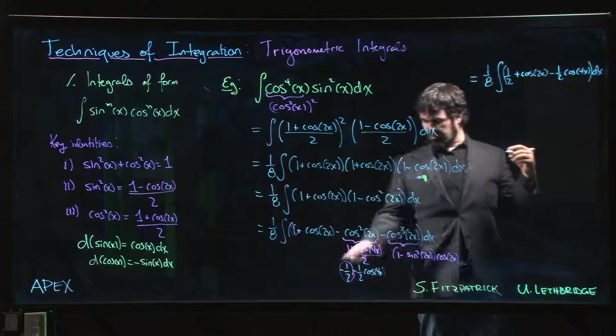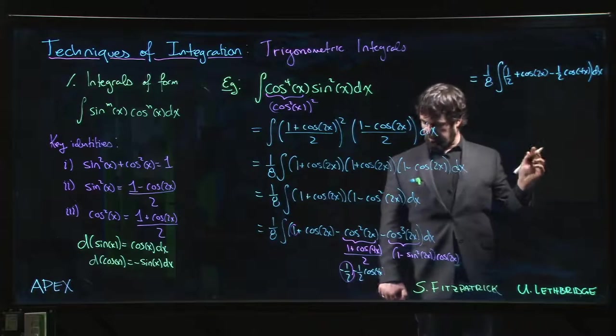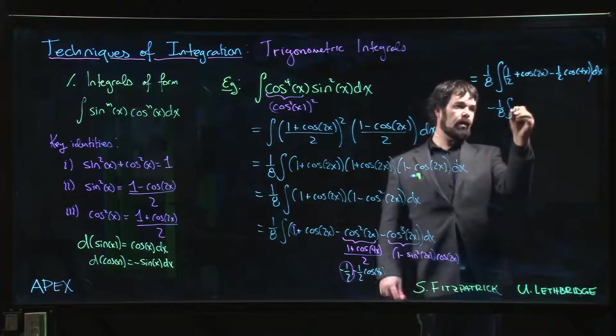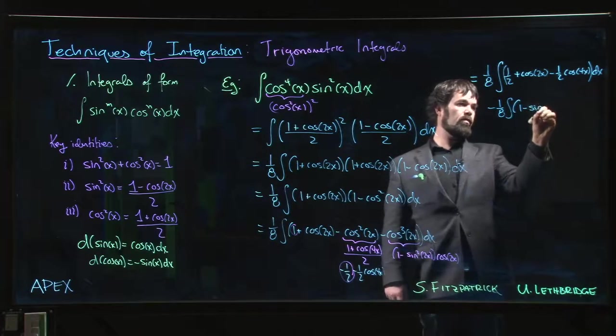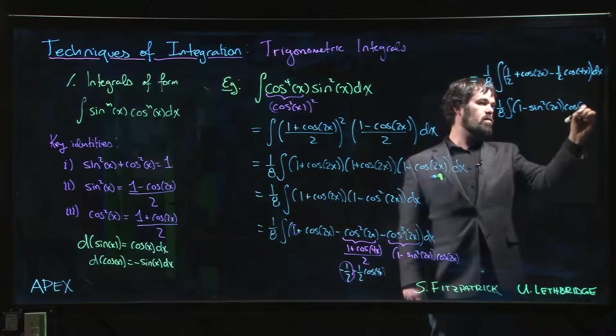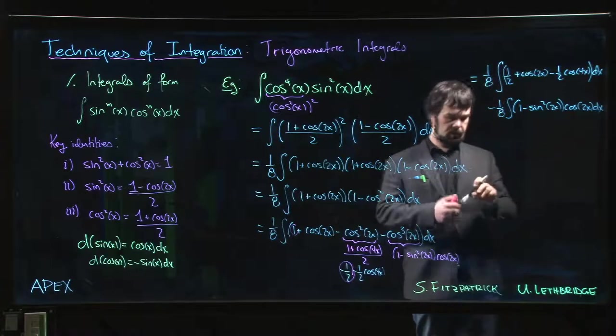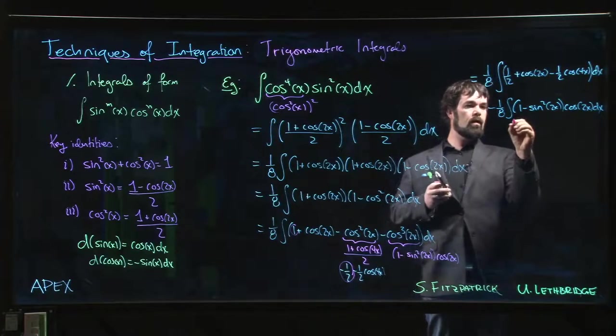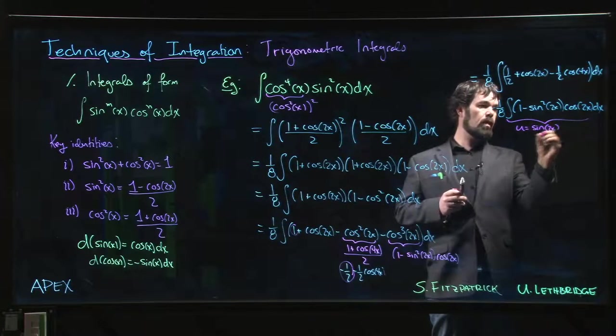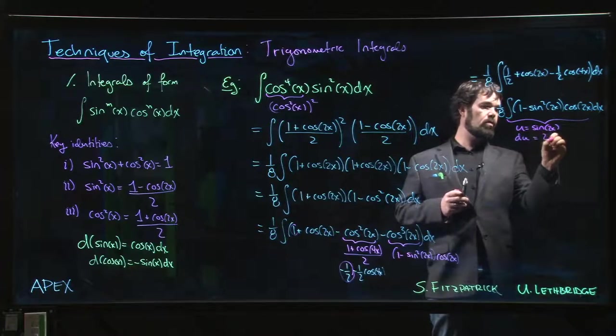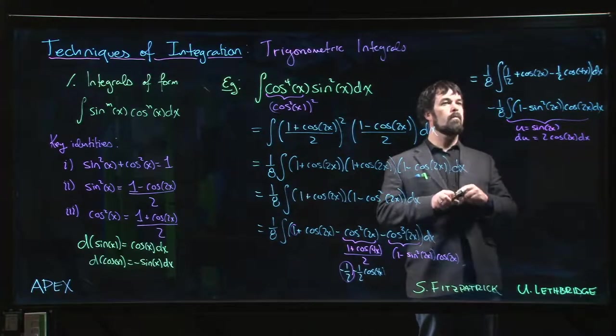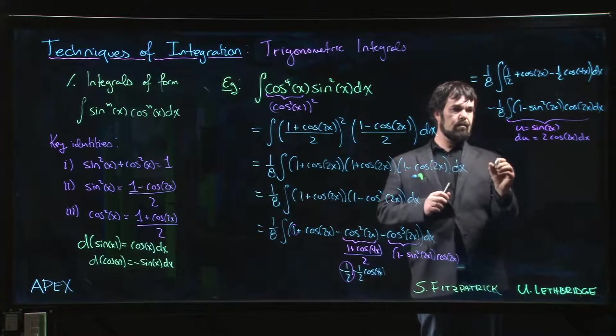Close that off. Now I have one term left, but I'm going to write that in a separate integral, not just because I ran out of room, but also because we need to do a substitution there. So this, we have 1 minus sin squared 2x cos 2x dx. So on this one, I'm going to let u equal to sine 2x. So du is 2 cos 2x dx.